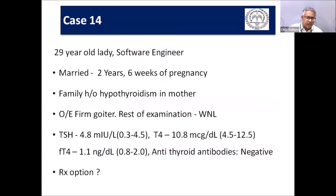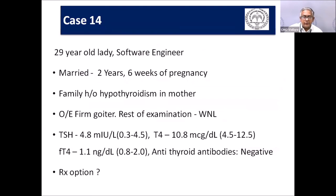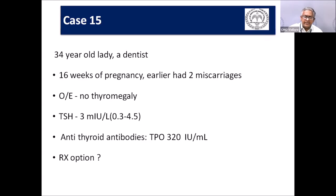Case: A 29-year-old software engineer, 6 weeks pregnant, family history of hypothyroidism, goiter, TSH of 4.8, negative anti-thyroid antibodies. Despite negative antibodies, given family history and thyromegaly, levothyroxine was initiated. Another case: a dentist, 16 weeks pregnant, two prior miscarriages, borderline TSH but strongly positive TPO antibodies — levothyroxine initiated at 25–50 micrograms per day for the benefit of doubt.